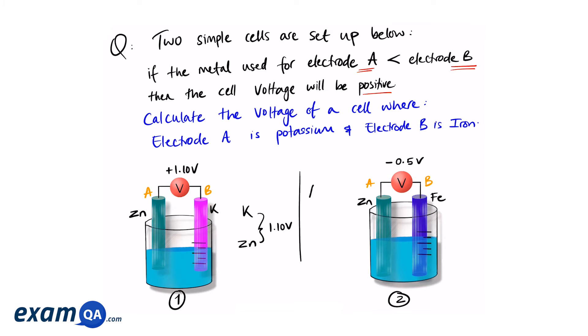Looking at cell two, we have electrode A and electrode B. Electrode A is made of zinc and electrode B is made of iron. The overall cell voltage is minus 0.5 volts. This time it's a negative number. And going back to the question, if B is more reactive than A, it will be positive. Since the cell voltage is negative, that must mean that A is more reactive than B this time.